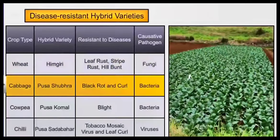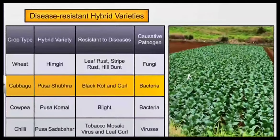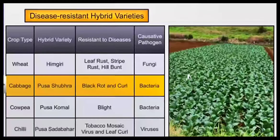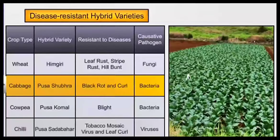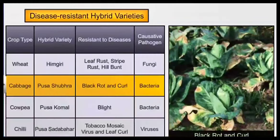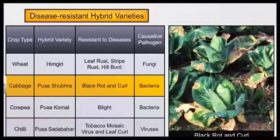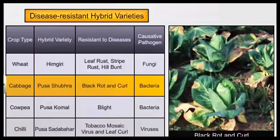The second one is Pusa Subra, a variety of cabbage which is resistant to bacterial diseases like black rot and curl disease.